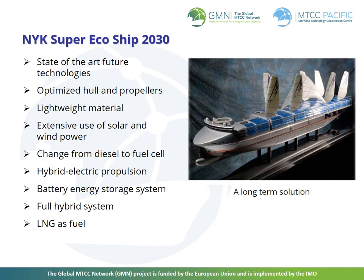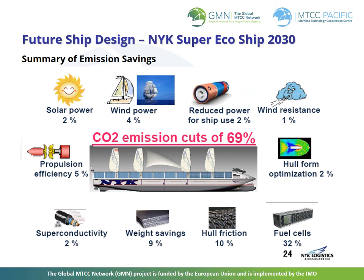The ship of the future may well be equipped with state of the art technologies. It may include optimized hull and propellers built with lightweight materials, extensive use of solar and wind power, and a change from diesel to fuel cells. A hybrid electrical propulsion will have a battery energy storage system or will be a full hybrid system. In the near future we will also see LNG as fuel. The NYK Super Eco Ship of 2030 could reduce 69% of CO2 emissions if all of the technology can be harmonized and used together efficiently.